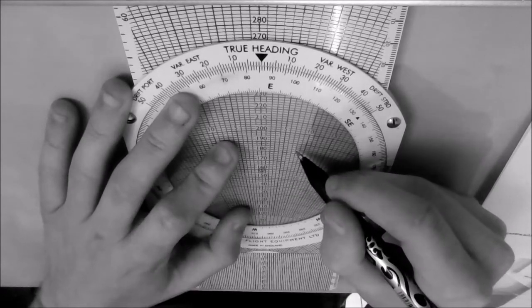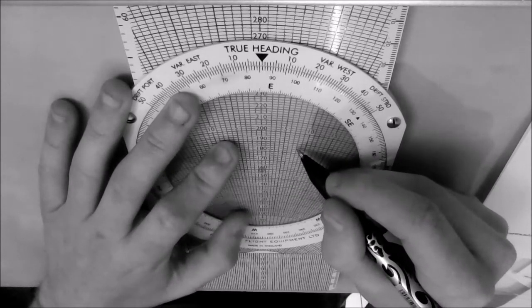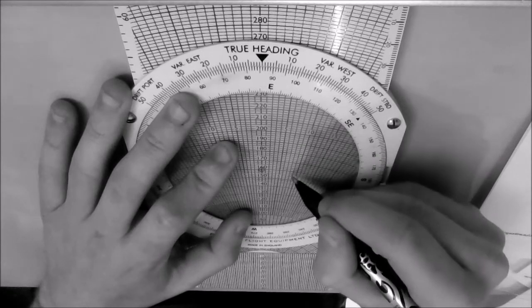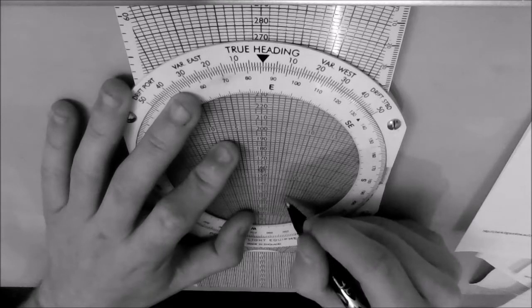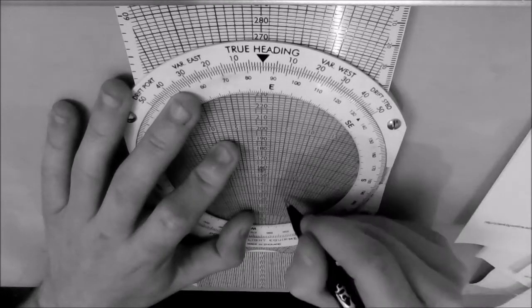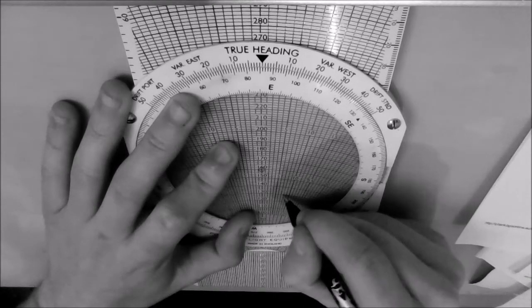The question is where? So what we'll do is on the 8 mark, we'll go down to our ground speed, which is 130 knots. Staying on the 8 mark, and just mark a dot there.